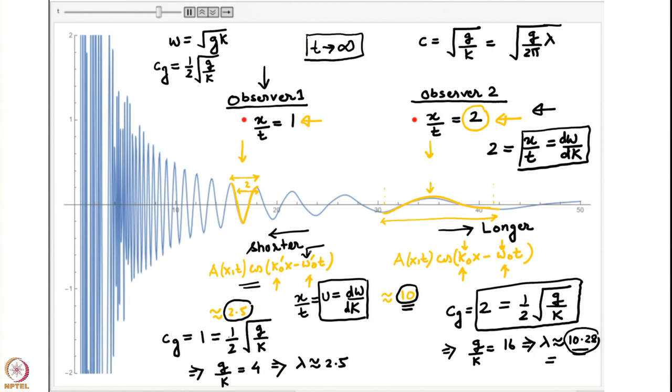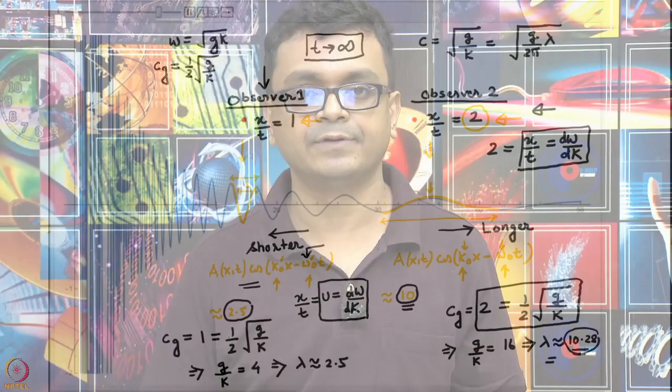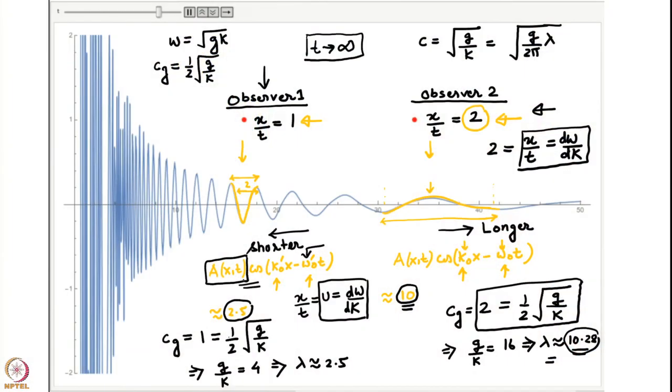It is clear that this depends on the speed of the observer, so every observer sees a different wave number. The amplitude of the waveform is in general a function of space and time, and later in the course we will ask what equation governs this amplitude. This summarizes the solution to the Cauchy-Poisson problem: what does the waveform look like when an infinite number of wave numbers are excited through a delta function initial condition, and what is the local description of the wave packet. This is an approximation because we have not yet included nonlinear terms, and even within a linearized framework the description becomes quite complicated with an infinite number of wave numbers present.